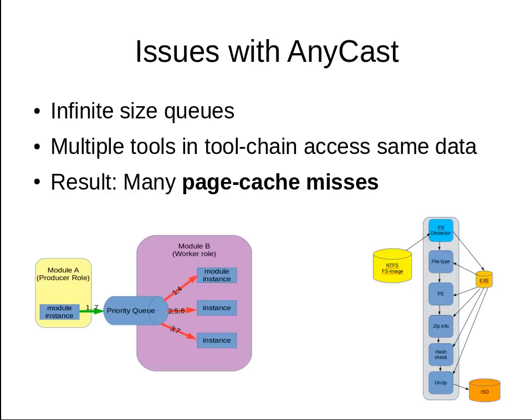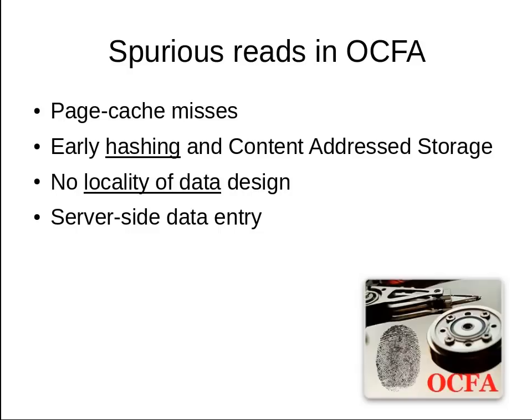So what issues were there with the Anycast? The problem lies in the very nature of the computer forensic process, where multiple tools in a tool chain are used consecutively on a single piece of data. The infinite size queue, combined with lack of throttling in the OCFA framework, resulted in much data having long been moved out of the operating system's page cache by the moment the next tool accessed it. This would result in many page cache misses and thus many spurious reads from the actual hard disk — a significant performance issue given the IO intensive nature of computer forensics.